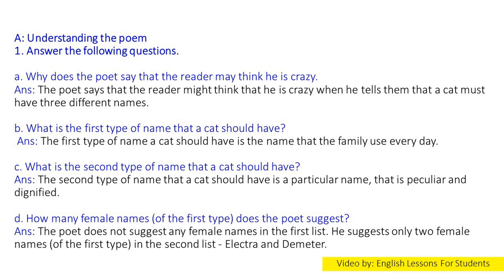B. What is the first type of name that a cat should have? Answer: The first type of name a cat should have is the name that the family use every day. C. What is the second type of name that a cat should have? Answer: The second type of name that a cat should have is a particular name that is peculiar and dignified.